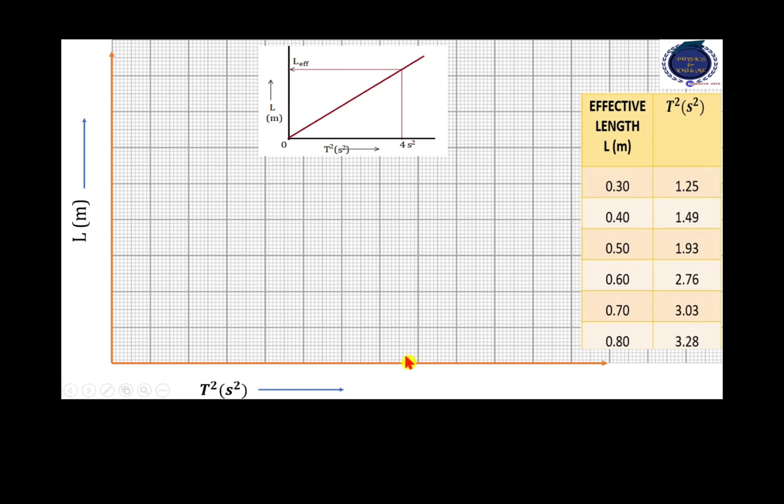More space is available along the x-axis compared to the y-axis. Therefore, we decide our scale accordingly. Along the x-axis, 1 cm will be equal to 0.5 seconds square. And along the y-axis, 1 cm will be equal to 0.2 meters. Students, we can decide the scale according to the distance available for us in our graph sheet. We can change it. But remember that always, it should be defined on 1 cm.